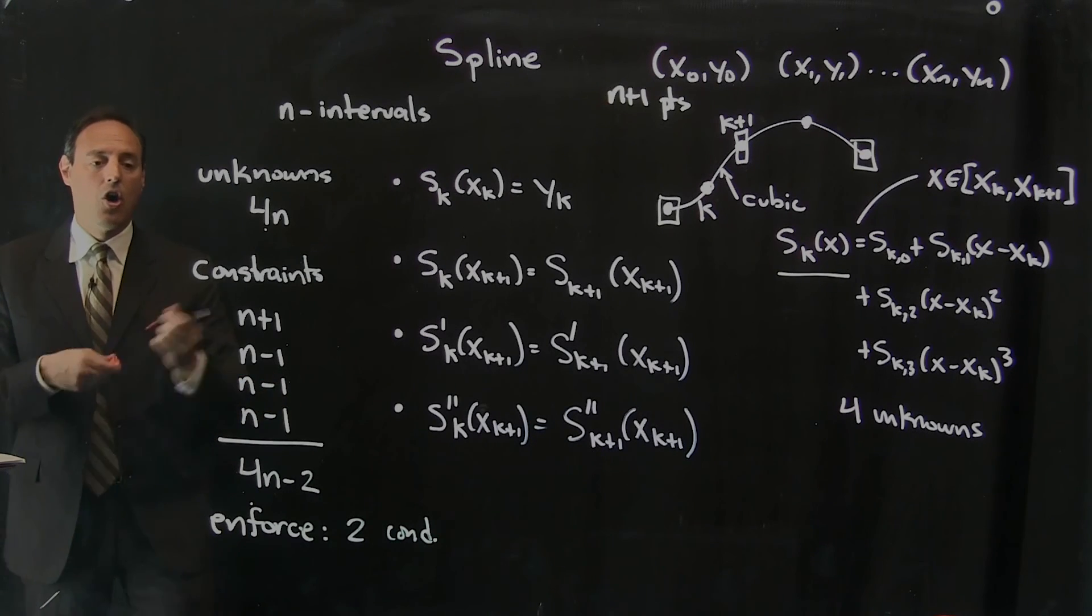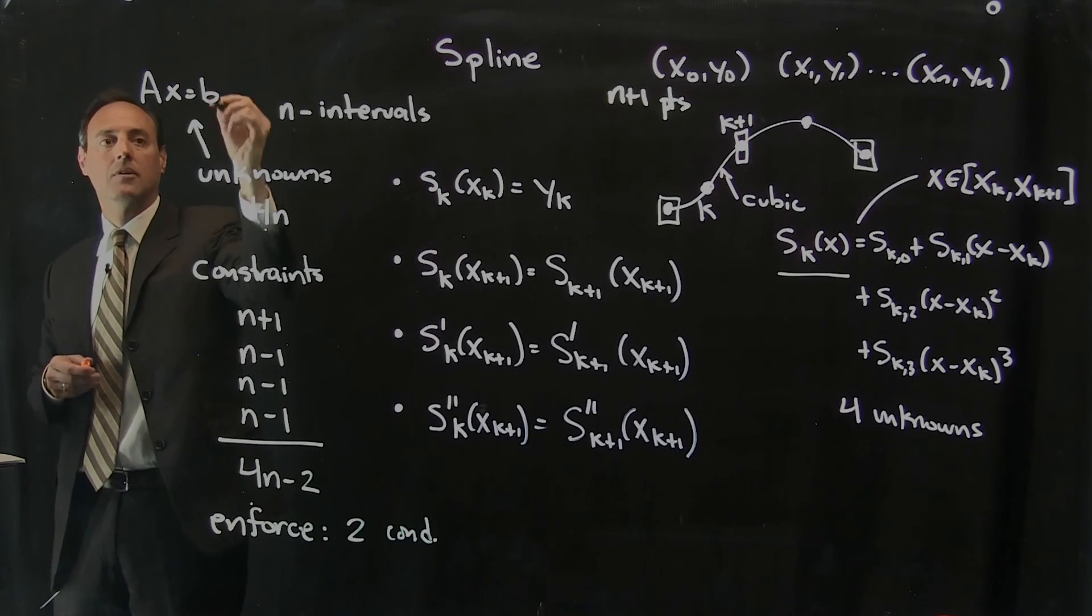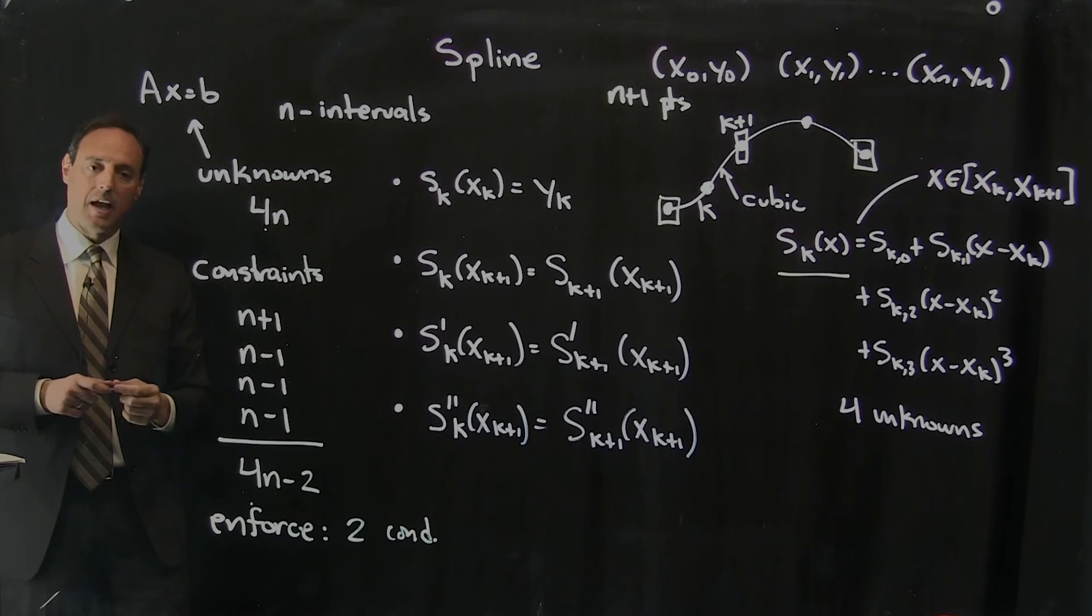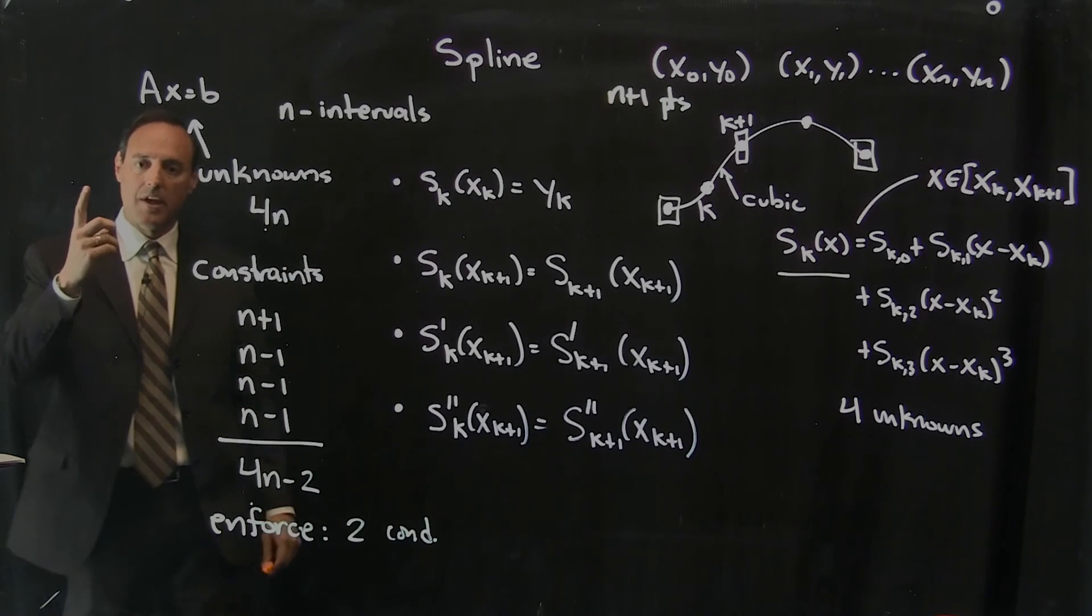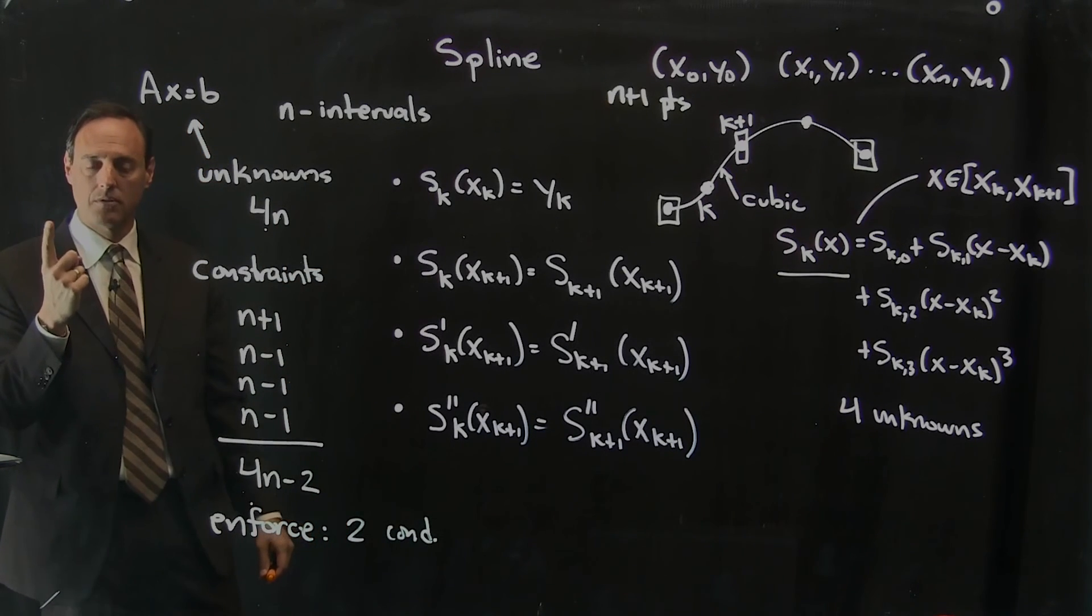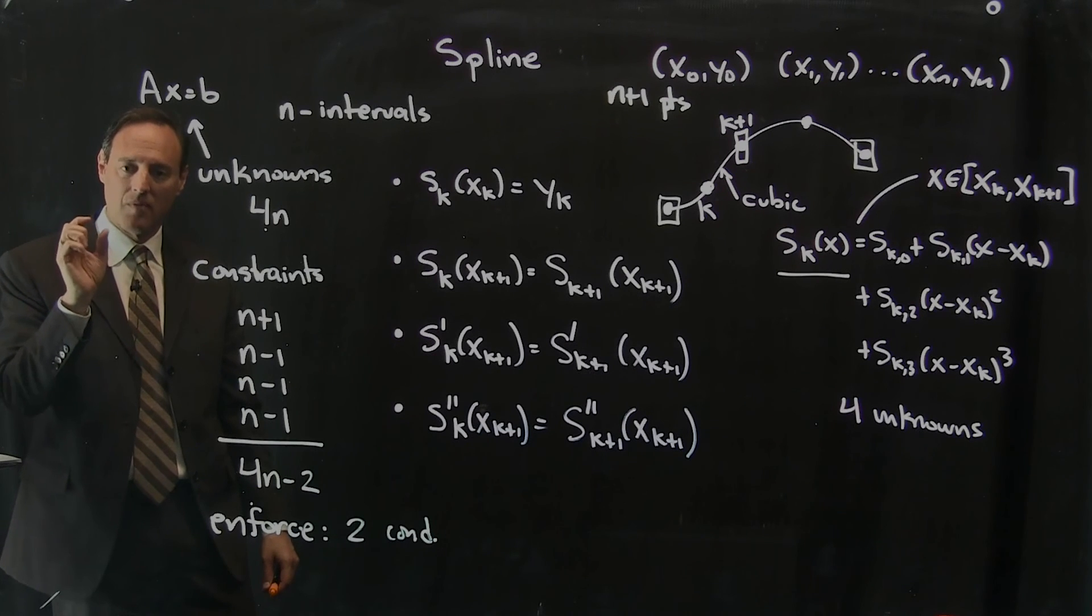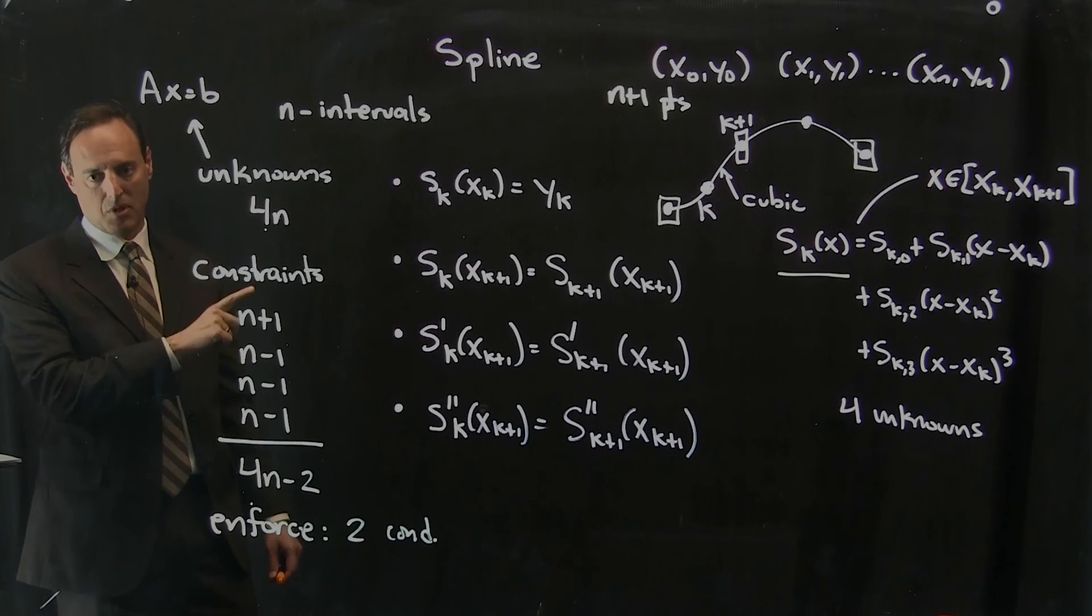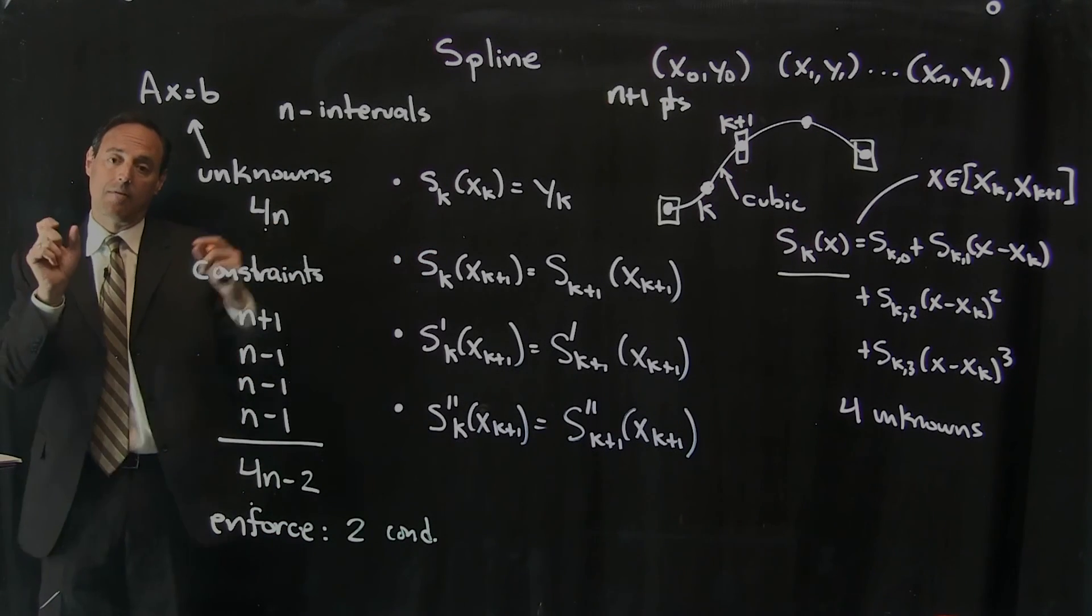So in either case, all this is leading me to is a giant Ax equal to b. And this Ax equal to b solves for all the splines that I have in my system. And these splines now go very smoothly through all the data. They have a continuous function, goes through the data. The first and the second derivative are also continuous. So it's going to be very smooth. But remember, every interval is an individual spline or individual cubic, right? So you don't have a global function for the whole thing. You have local fits.